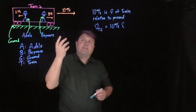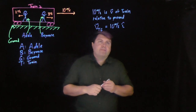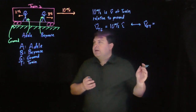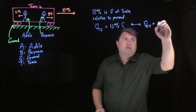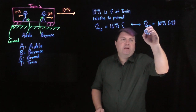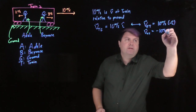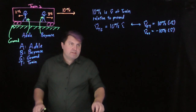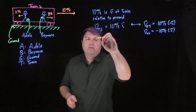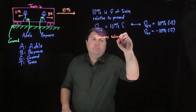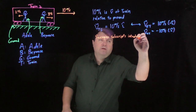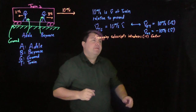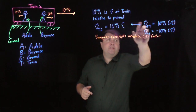If I am on the train as a conductor or something like that, I see the ground moving the other way. So the velocity of the ground relative to the train is the same speed but in the opposite direction — 10 meters per second in negative i-hat, or equivalently negative 10 meters per second in i-hat. Swapping subscripts introduces a minus one factor. Going from TG (train relative to ground) to GT (ground relative to train), the difference is a minus sign.